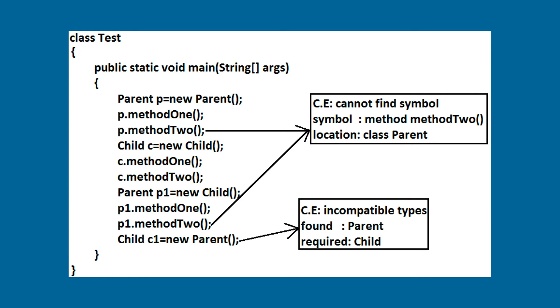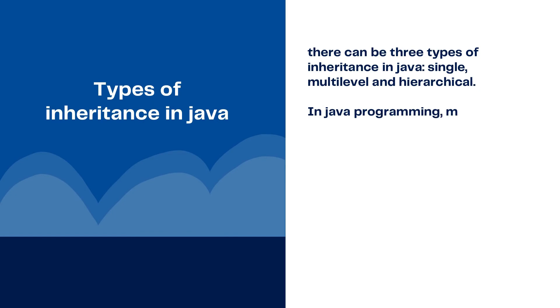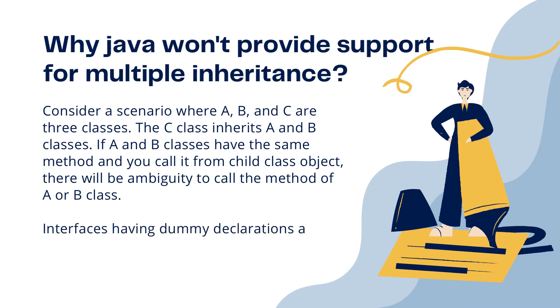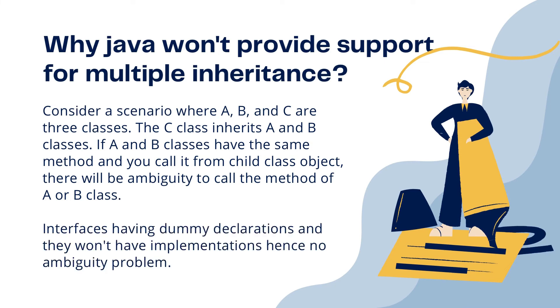In Java, multiple and hybrid inheritance is supported through interfaces. In Java classes, we cannot support multiple inheritance directly. Consider a scenario where classes A, B, and C exist, and class C inherits both A and B. If A and B have the same method and you call it from the child class object, there will be ambiguity about which method to call. Interfaces have only dummy declarations without implementation, so there is no ambiguity problem.